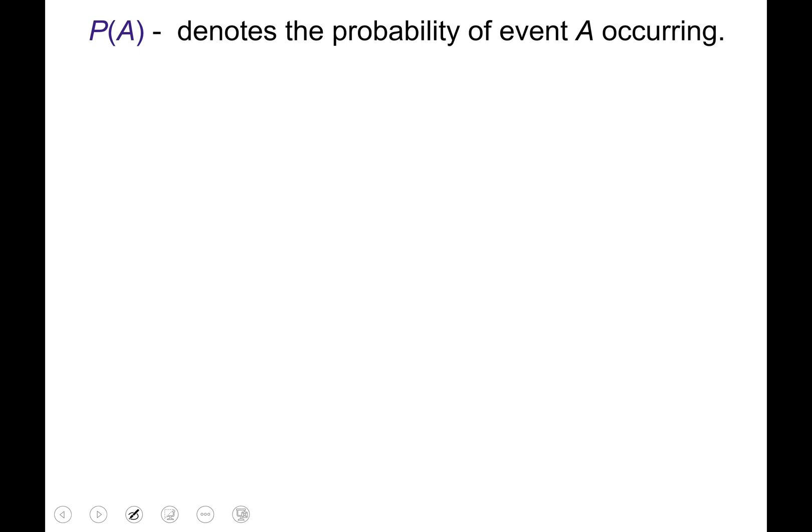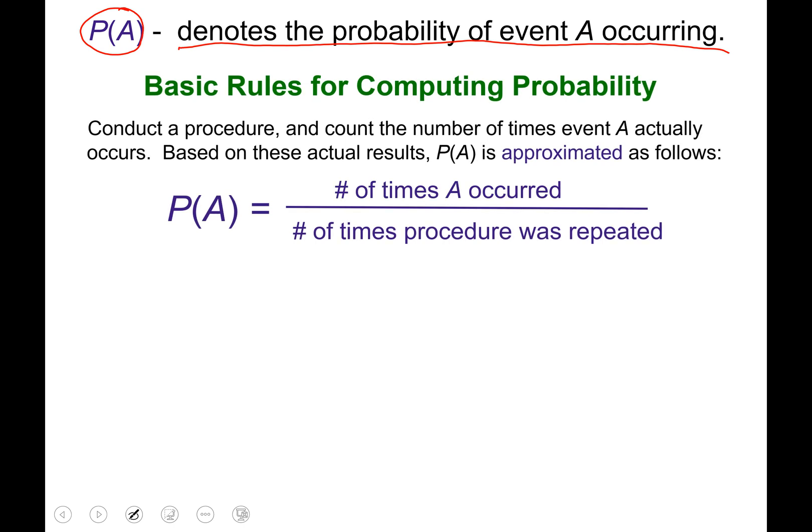Okay, if you see a capital P open parentheses capital A close parentheses like that, it's not multiplication like you might think from an algebra class. What that means is it denotes the probability of event A occurring. So the probability of event A occurring is equal to a fraction. The numerator will be the number of times that A actually occurred and the denominator will be the number of times the procedure was repeated.